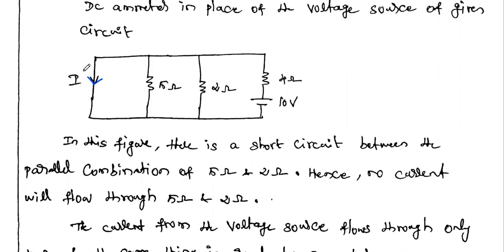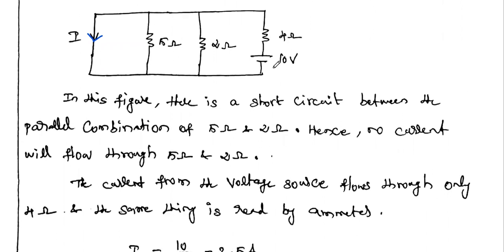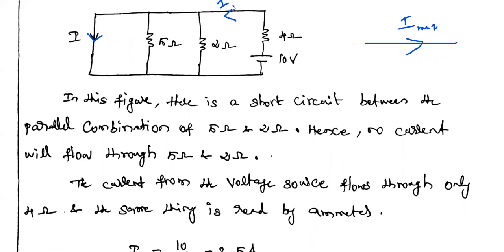Now in the new diagram, there is a short circuit parallelly connected with the 5 ohm resistor, parallelly connected with the 2 ohm resistor, with a battery and 4 ohm present. By the short circuit principle, if there is a short circuit, the current flowing through it is maximum. So here, parallel to the short circuit, there are two resistances. The total current flows fully through the short circuit — not through the 5 ohm and 2 ohm resistors. There is a short circuit between the parallel connection of the 5 ohm and 2 ohm, hence no current will flow through those resistors.